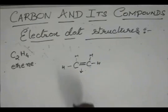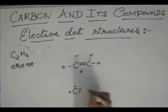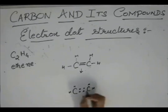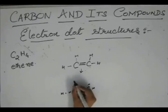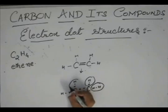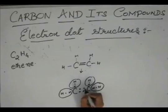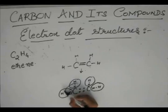Let us proceed to this electron dot structure. I am drawing it like this — instead of all the electrons on all 4 sides of carbon, I am drawing these two electrons on this side because we need them for the double bond. Hydrogen, hydrogen, hydrogen and hydrogen. Now, make the hydrogen happy — give them the electron of carbon. These two electrons are shared with these; this electron is shared with this electron, and this electron is shared with this electron.